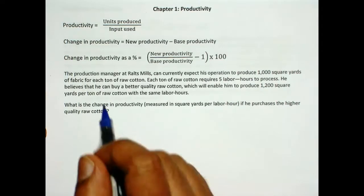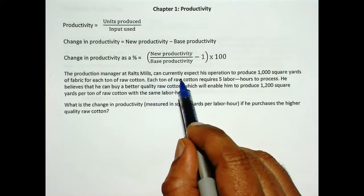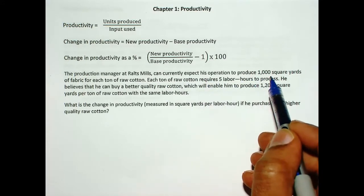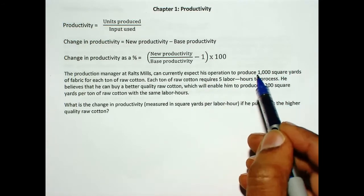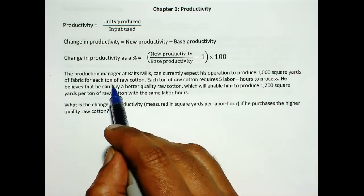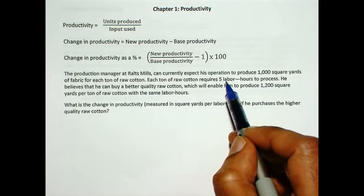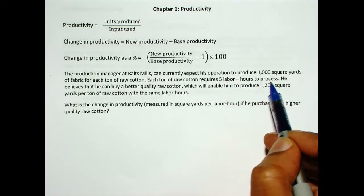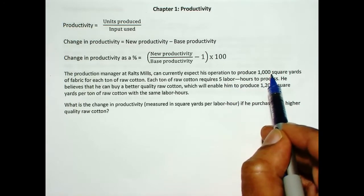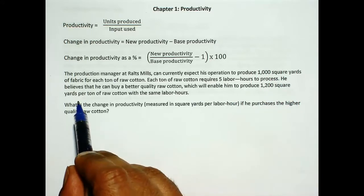In this problem, we have a production manager of a company that can currently expect to produce 1000 square yards of fabric from each ton of raw cotton. Each ton of raw cotton requires 5 labor hours to process, so 5 hours of labor produces 1000 square yards.